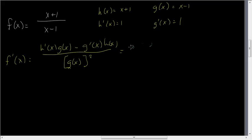Correction, which is a good reason since we wrote it down. h prime of x is 1. 1 times g of x, which is x minus 1, minus g prime of x, which is 1, times h of x, which is x plus 1, all over g squared, which is x minus 1, quantity squared.